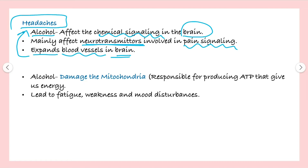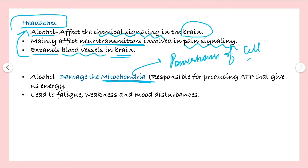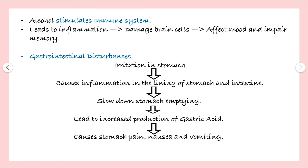Alcohol also damages the mitochondria present in our cells. Mitochondria are the powerhouse of the cell — they are responsible for producing ATP, which gives us energy. If they are damaged, a person will feel fatigue, weakness, and some mood disturbances.